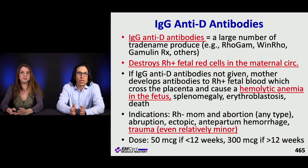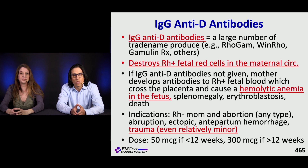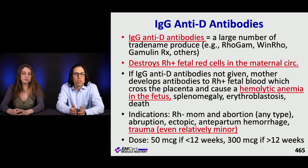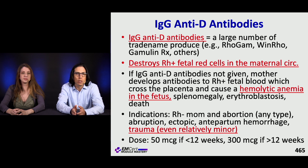Regarding IgG anti-D antibodies (Rh immunoglobulin), these destroy Rh-positive fetal red cells in the maternal circulation. The problem arises when an Rh-negative mother develops antibodies to Rh-positive fetal blood crossing the placenta, which can cause hemolytic anemia, splenomegaly, erythroblastosis, and fetal death. Give anti-D immunoglobulin to an Rh-negative mother with any type of abortion, abruption, ectopic pregnancy, antepartum hemorrhage, or even relatively minor trauma.